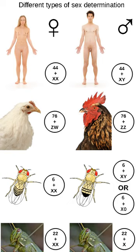Some species, such as fruit flies, use the presence of two X chromosomes to determine femaleness. Species that use the number of X chromosomes to determine sex are non-viable with an extra X chromosome.